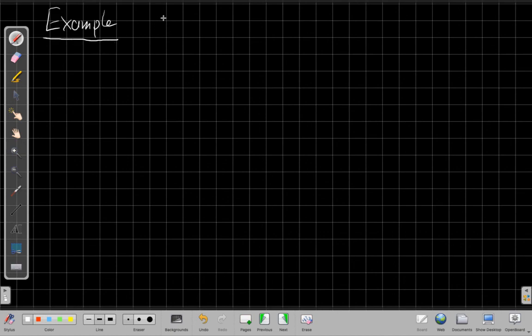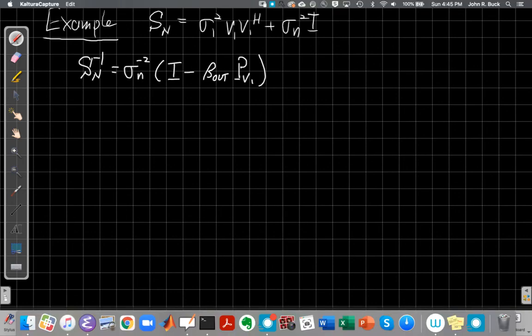Alright, so again in our example, we have that S of n, sigma 1 squared, V1, V1 Hermitian plus sigma n squared i. And so, and we had earlier, we could also use our expression for S, we found expressions for S n and S n inverse.